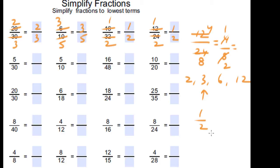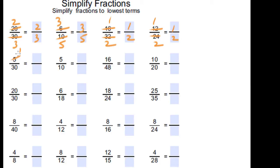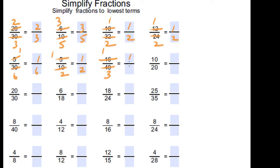5 times 1 is 5 and 5 times 6 is 30, so 1 over 6 is the simplified form of 5 over 30. 5 times 1 is 5 and 5 times 2 is 10, so 1 over 2. 16 times 1 is 16 and 16 times 3 is 48, so 1 over 3. 10 times 1 is 10 and 10 times 2 is 20, so 1 over 2.